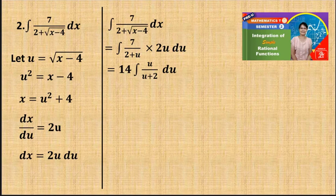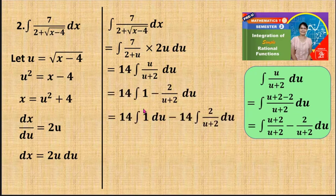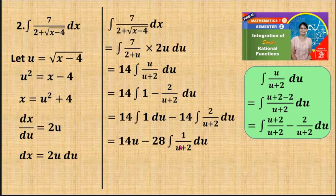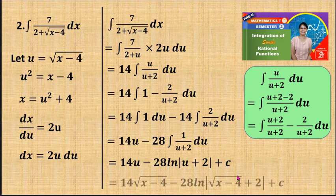After substitution, the integral becomes a rational integral in terms of u. Recalling the techniques for rational integration, I find this is an improper rational function. Using long division or another suitable method, I convert it to a proper rational function. After separating the integral, the first part is settled easily, and the remaining rational integral can be integrated as a logarithm. Finally, I return to x terms and that gives the final answer.